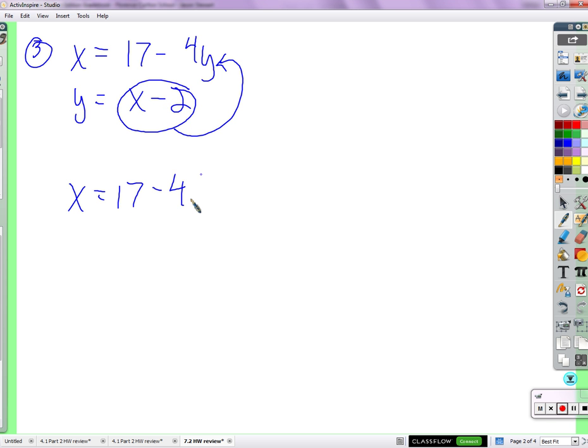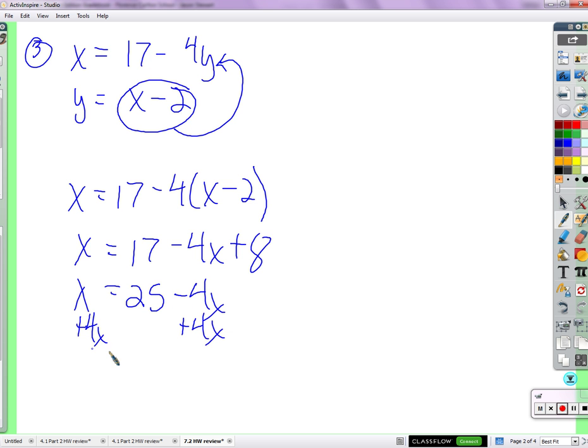17 minus 4 times x minus 2. I'm going to distribute that negative 4 to start with. Negative 4x plus 8. x is equal to 17 plus 8 is 25 minus 4x. We're going to add 4x to both sides. 5x equals 25 and x equals 5. We're going to divide both sides by 5.